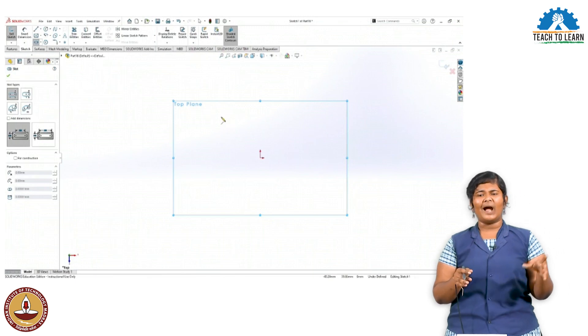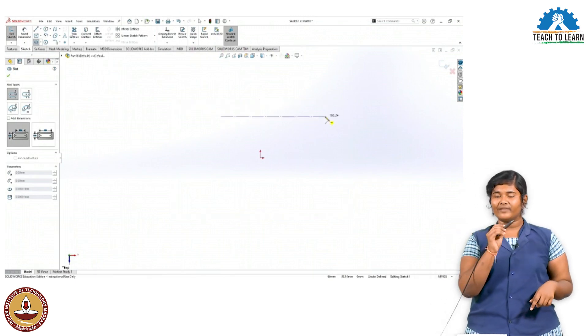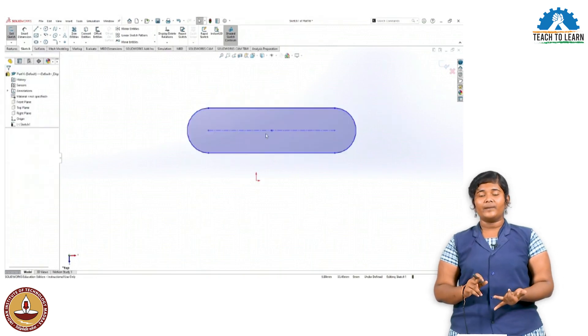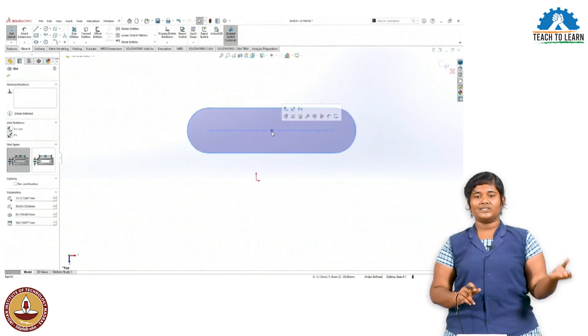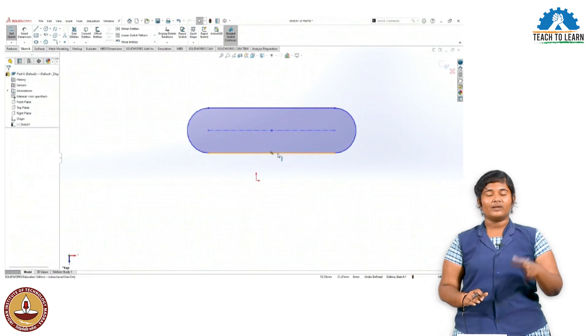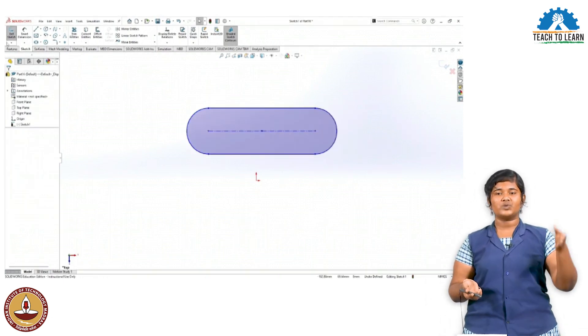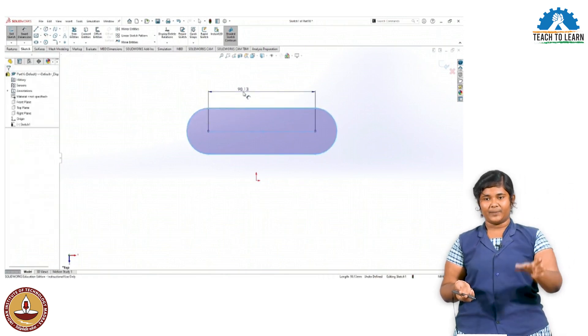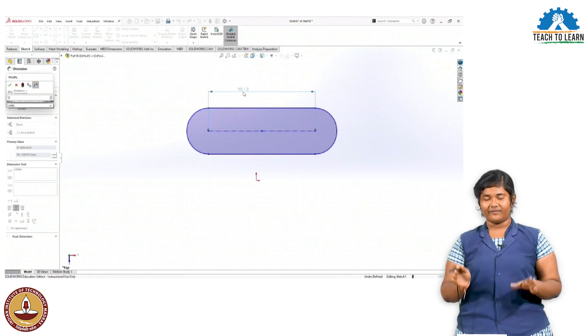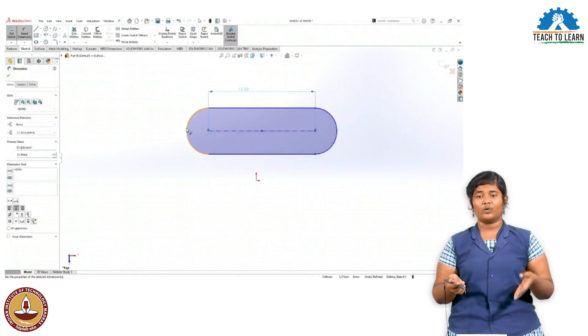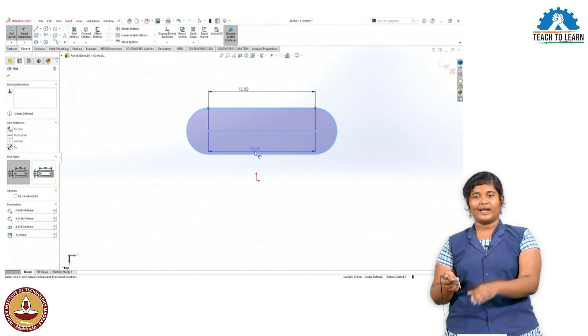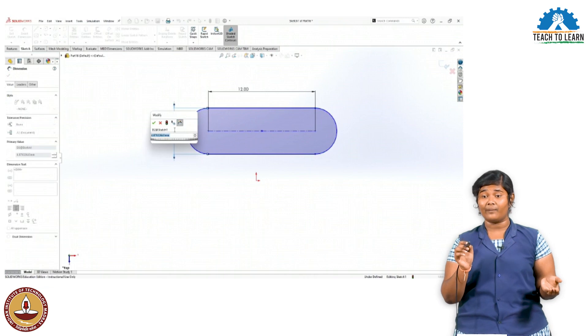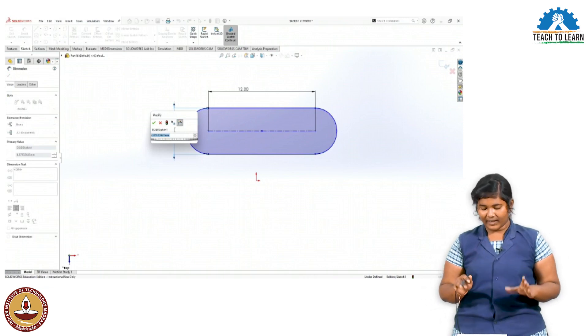The model starts as under-defined, shown by the blue outline. To define it, I set dimensions. I measure the distance from the center origin. Using smart dimensions from the left side corner, I set the dimensions. Once it's properly centered at the origin, the color changes from blue to black, indicating the model is fully defined.